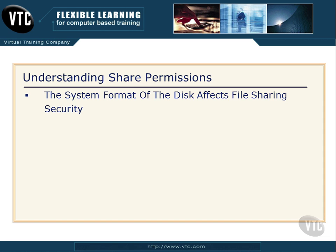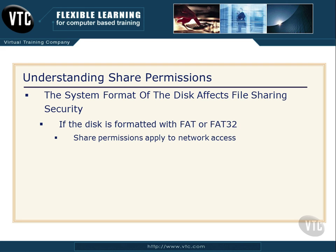The system format of the disk you're doing the file sharing on affects the type of file sharing security. If the disk that the file or folder is sitting on is formatted with the FAT or FAT32 system, then the share permissions apply to network access only. The only time these share permissions will keep anyone from looking at that file is when it's being accessed over the network. If someone logs on locally to the machine, they can just go right in and look at that file or folder.